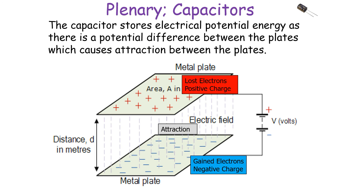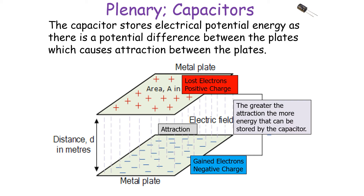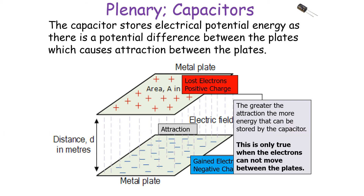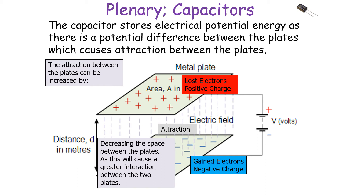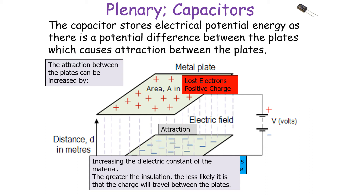The capacitor stores electrical potential energy because there's a potential difference between the plates, which causes an attraction between the positive plate (which has lost electrons) and the negative plate (which has gained electrons). The greater the attraction, the more energy the capacitor can store — but only if electrons cannot move between the plates. There are three ways to increase the attraction: first, increase the area of the plates to allow more charge to be stored; second, decrease the space between the plates to cause greater interaction; and third, increase the dielectric constant of the material, because greater insulation means less chance of charge traveling between the plates.